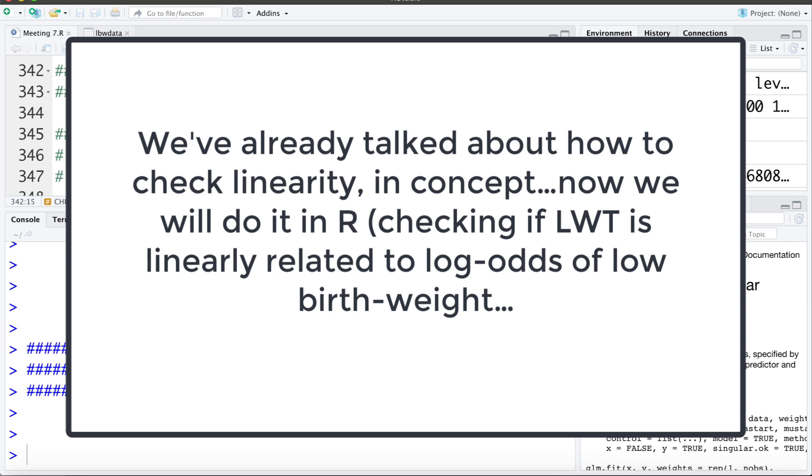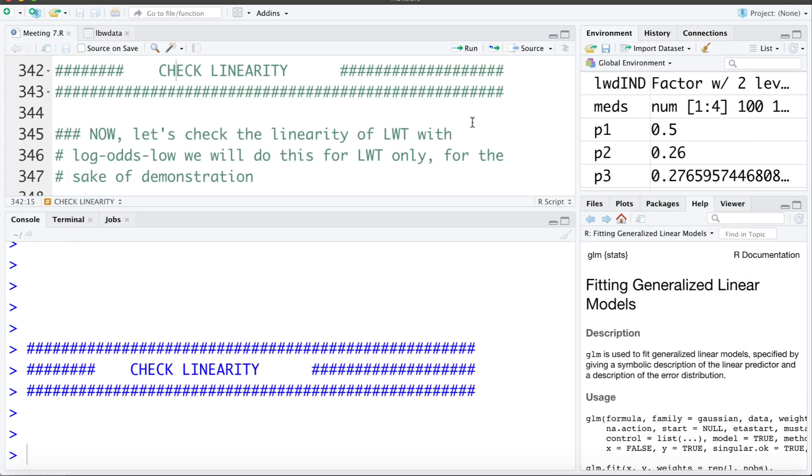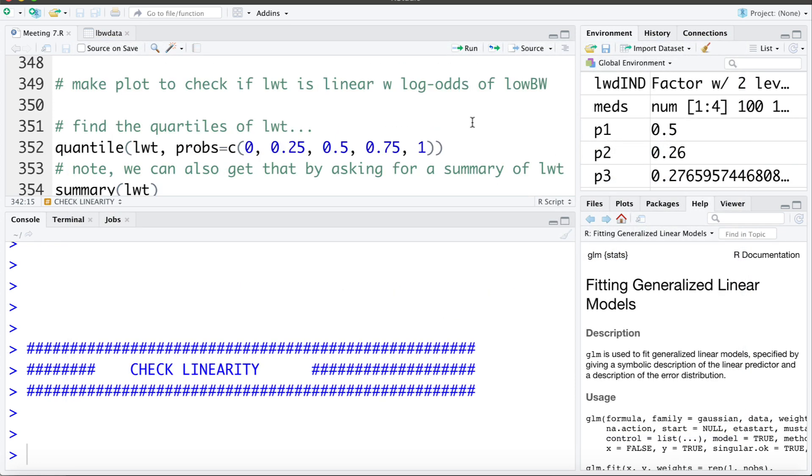I've already imported this data into R and attached it. We're going to check the linearity of LWT, the weight of last menstruation, with the outcome variable of low birth weight. We've already talked earlier how we can make a plot to check if LWT is linearly related to the log odds of low birth weight. So let's get to producing that plot.